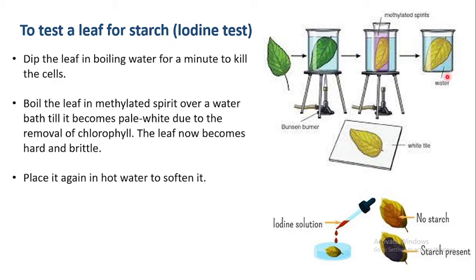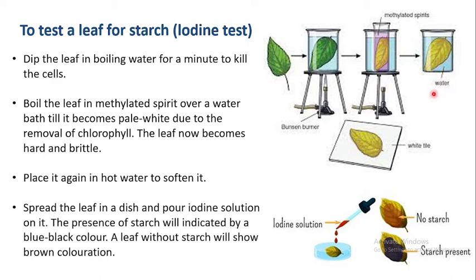Next, we place the hard and brittle leaf back into hot water so that it softens. Then we spread the leaf on a white tile or dish and pour iodine solution on it. The presence of starch will be indicated by a blue-black color. If starch is absent, the leaf will show a brown coloration.